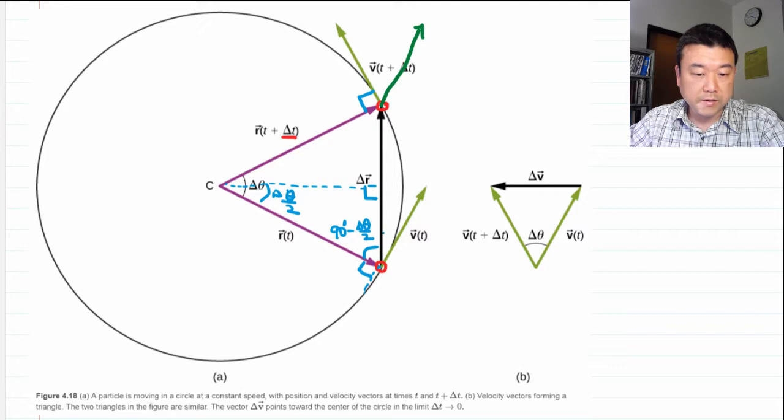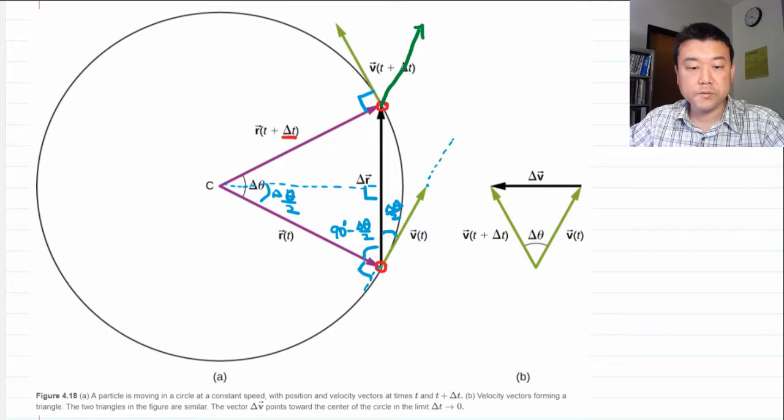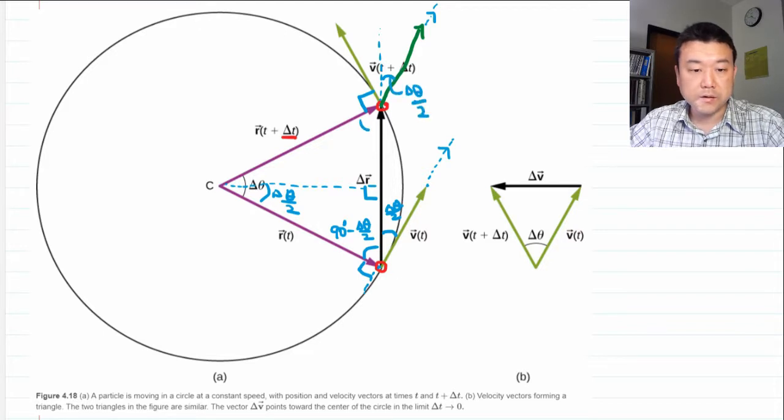So the angle here is delta theta over 2. And these two arrows that I've drawn are parallel to each other. That's what you get when you translate a vector so that you draw the same vector elsewhere. That means this angle here is also delta theta over 2, and the angle here is 90 degrees minus delta theta over 2 for the same reason as below.